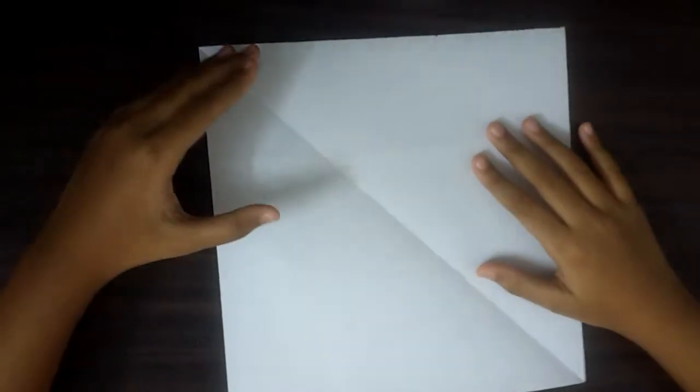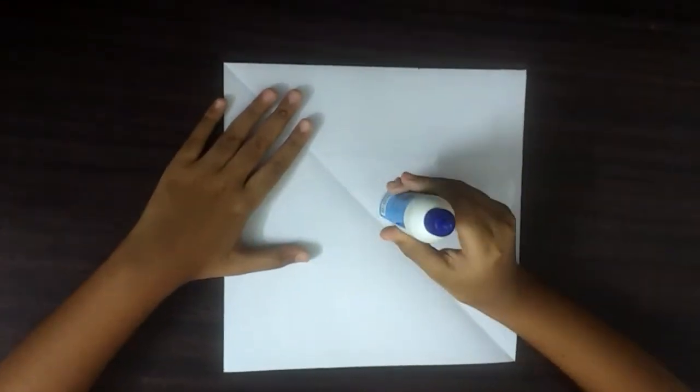So to make a paper envelope, we need a square paper and fevicol. So let's get started.